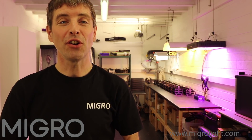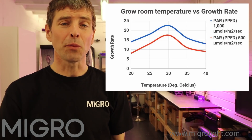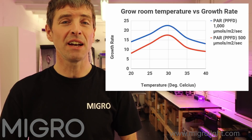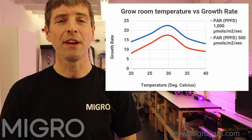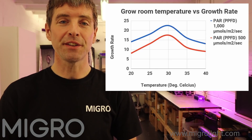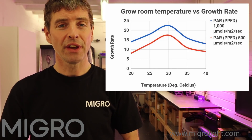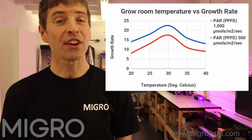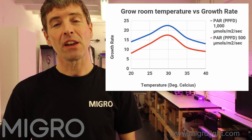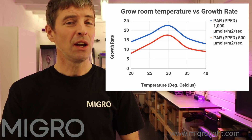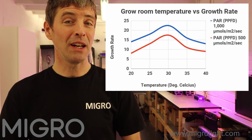The optimum temperature for plant growth was tested at two different light levels: a medium power intensity level of 500 micromoles per second, and then a very high level of 1000 micromoles per second. In both instances the maximum plant growth rate occurred at 30 degrees Celsius, and falls off quite significantly whether you're 5 degrees above or below this temperature.